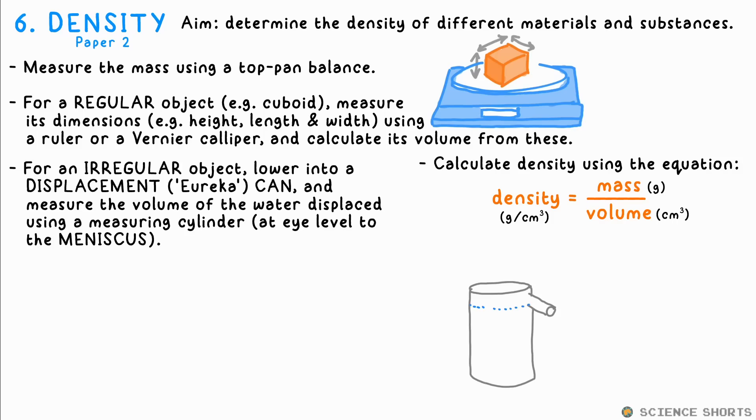For any irregular object, like a stone or a lumpy thing for which we can't calculate the volume, we use a displacement or eureka can. Fill it up with water to the spout, lower the object down with string until submerged, and collect the water displaced with the beaker. Put this into a measuring cylinder to get an accurate value for the volume of the object to calculate the density from, again using the equation.